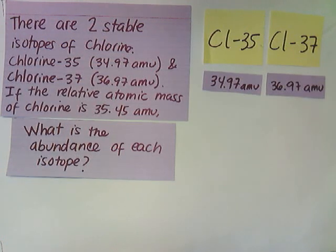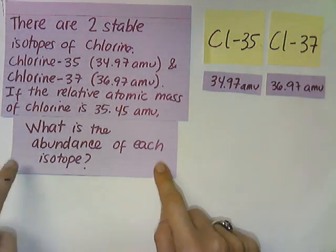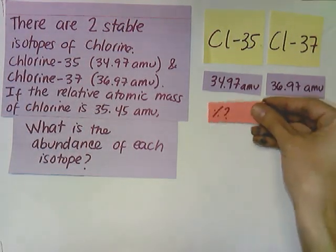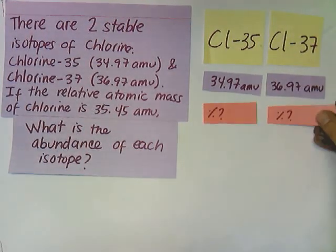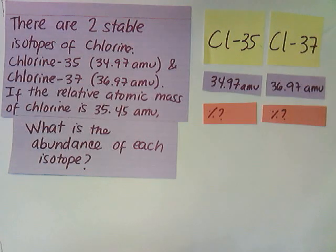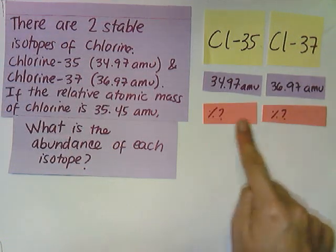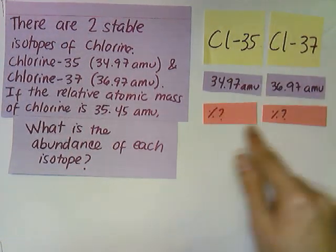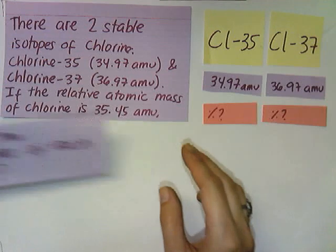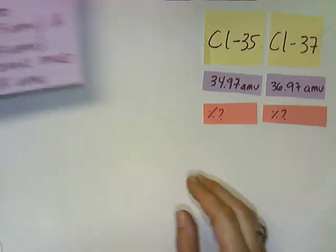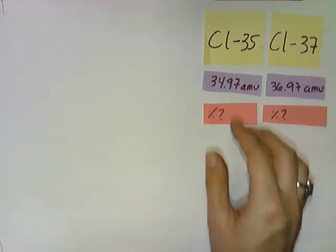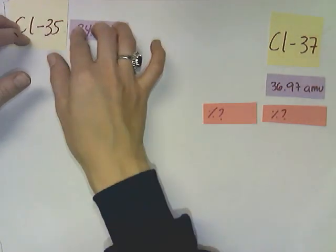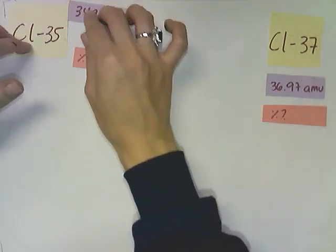And we're looking for the abundance of each isotope and that means a percentage. So what's the percentage for each of them? That's what we don't know. So what we're going to do in this problem is to determine the percentage for each of these. Now that I have my information here, I'm going to move this here to the side.